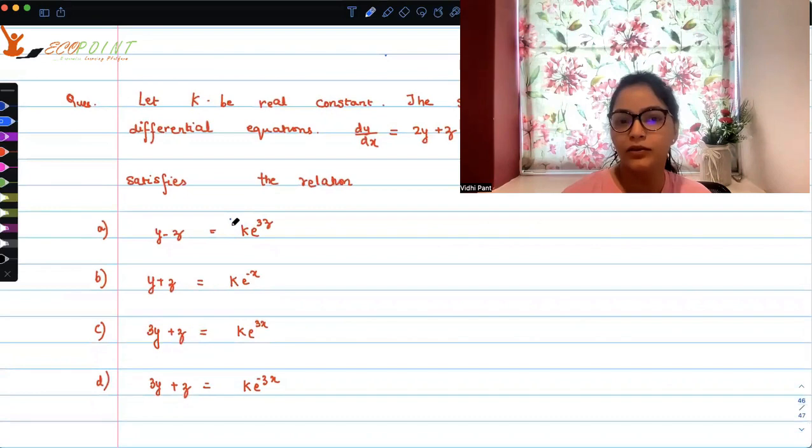So y minus z equals k times e to the power 3z, y plus z equals k times e to the power minus x, 3y plus z equals k times e to the power 3x, or is it 3y plus z equals k into e to the power minus 3x. You must pause here and try it out yourself.